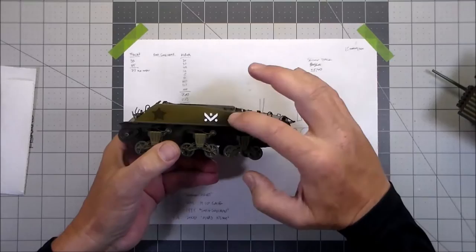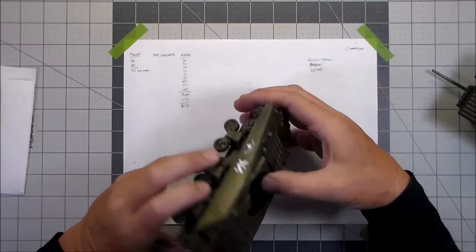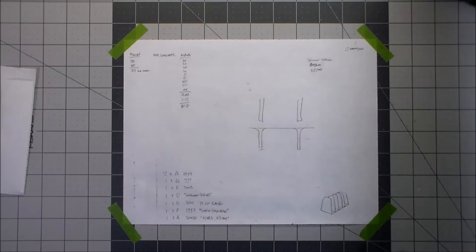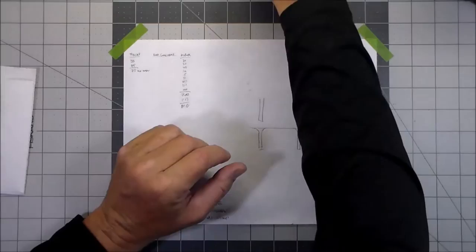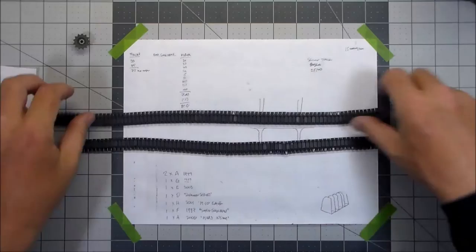Got the decals on here, need to touch them up a little bit with some setting solution, but that won't be a big deal. I'll do that and give it a quick gloss coat, and then I can start the washes and weathering.